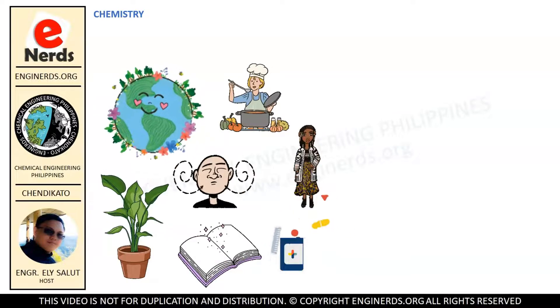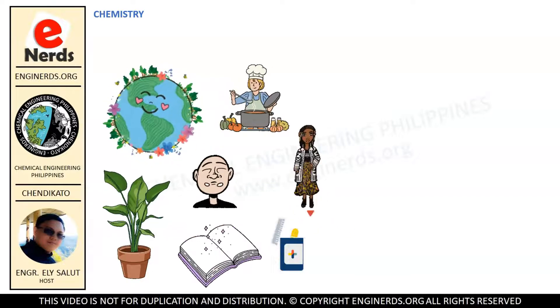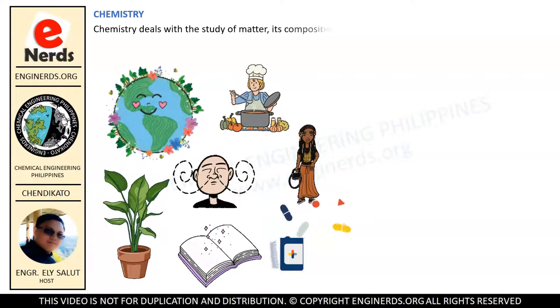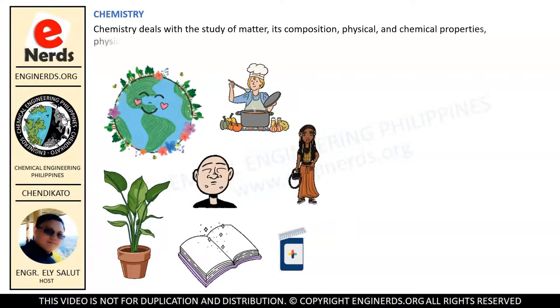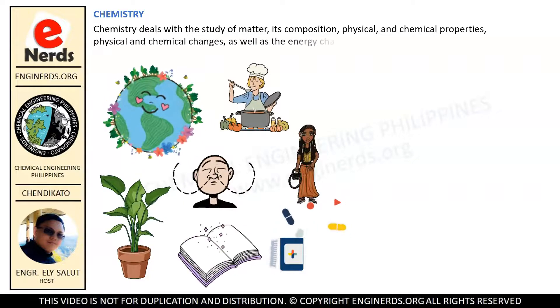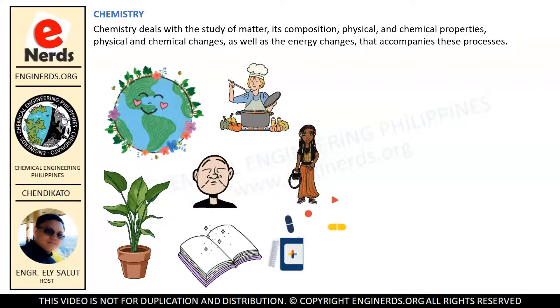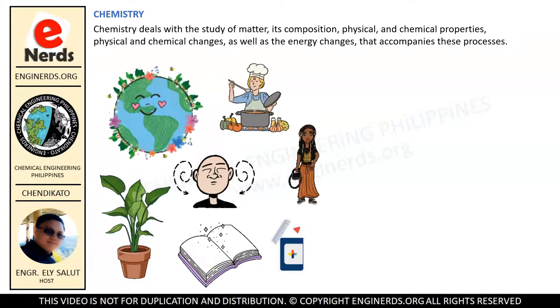Chemistry is the science principally concerned with materials which scientists call matter. Chemistry deals with the study of matter, its composition, physical and chemical properties, physical and chemical changes, as well as the energy changes that accompany these processes.